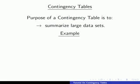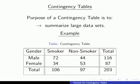I think working through an example would help explain the concept a bit better. Here we have the contingency table for a study that was carried out on a number of students, and we recorded smoking status and gender for each of them — these are our two categorical variables. In the bottom right-hand corner we have the total number of students surveyed. In the centre, 72 students were male smokers, 44 were male non-smokers, 34 were female smokers, and 53 were female non-smokers. 106 of the total were smokers, 97 were non-smokers, 116 were male and 87 were female.